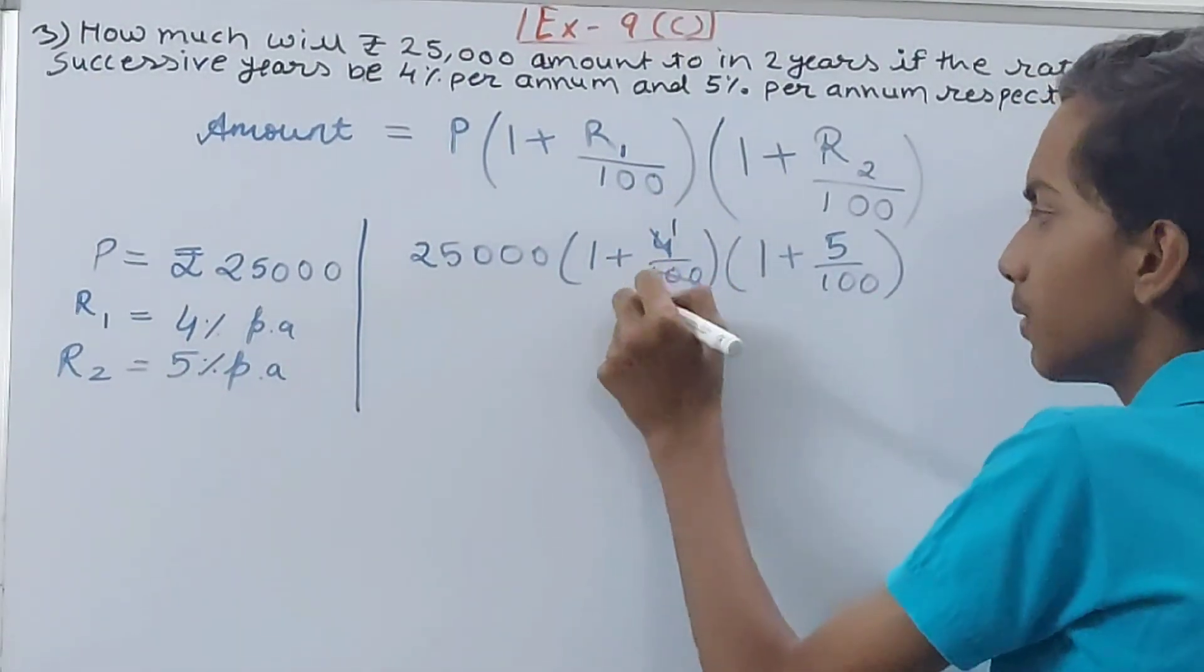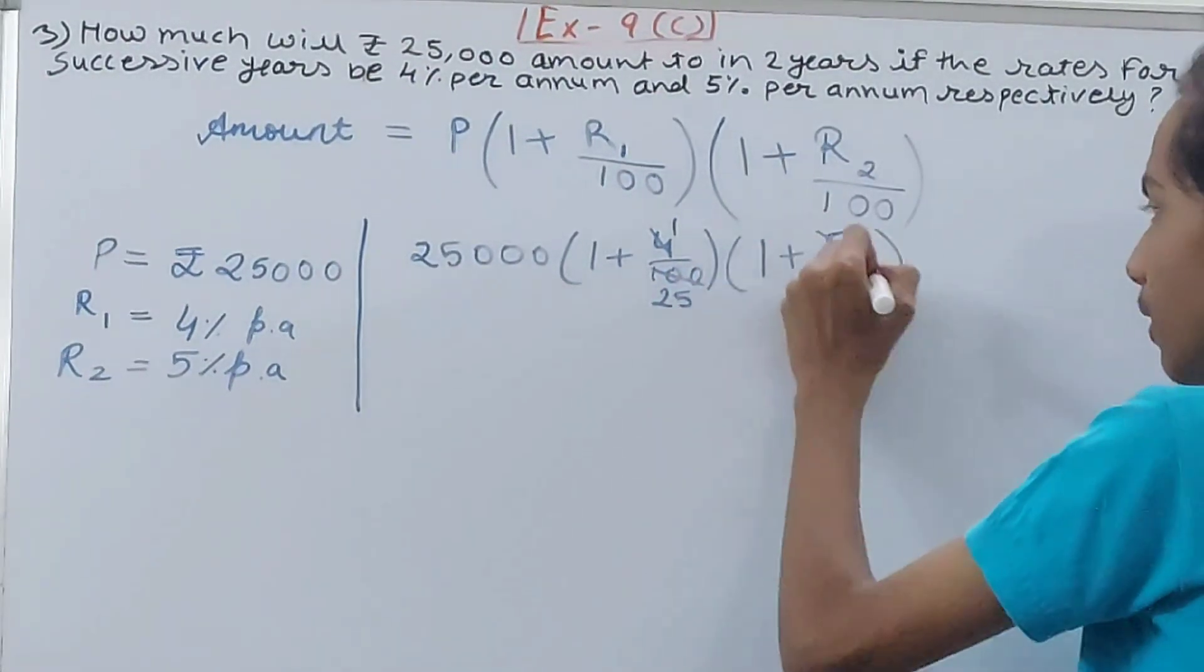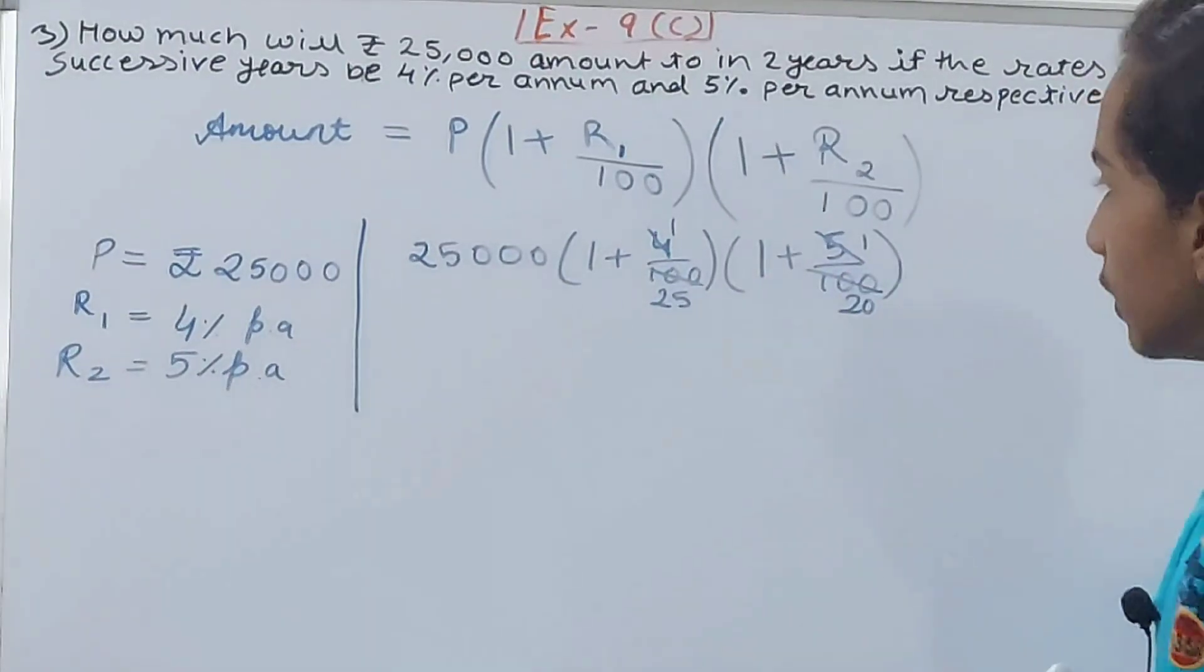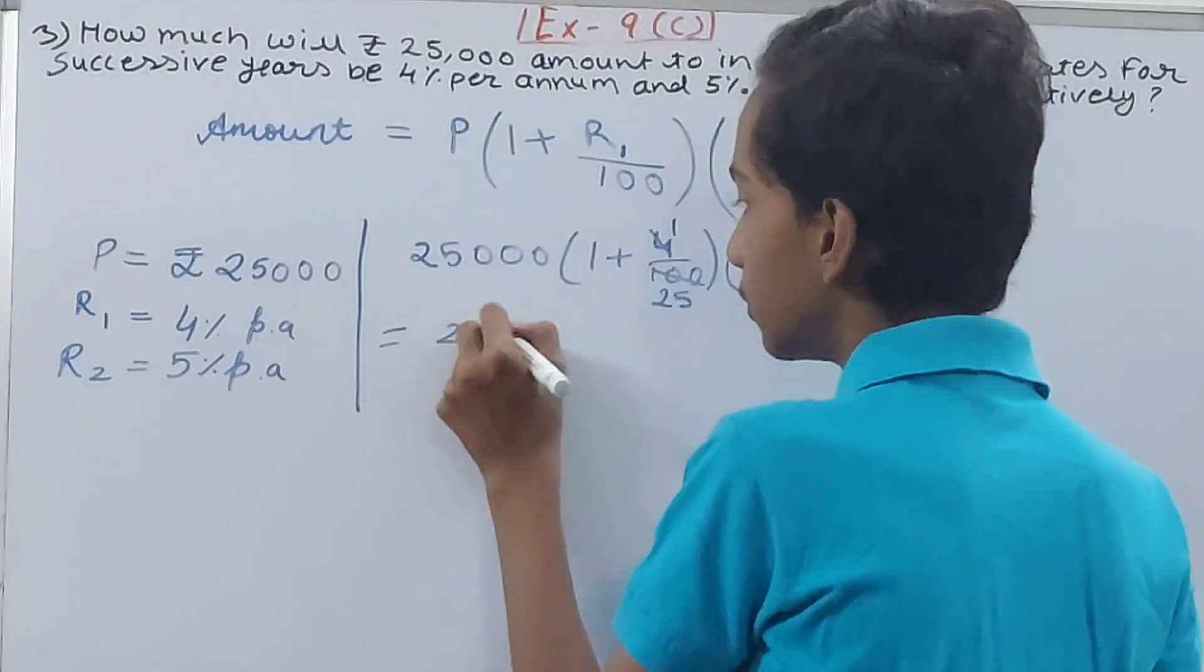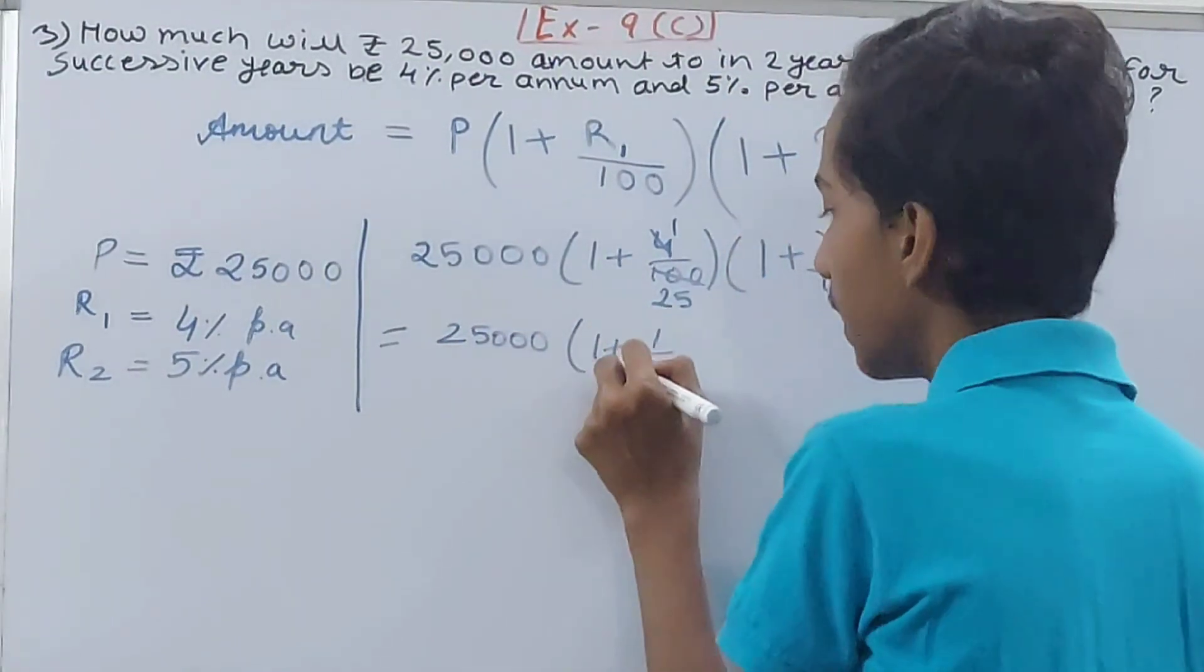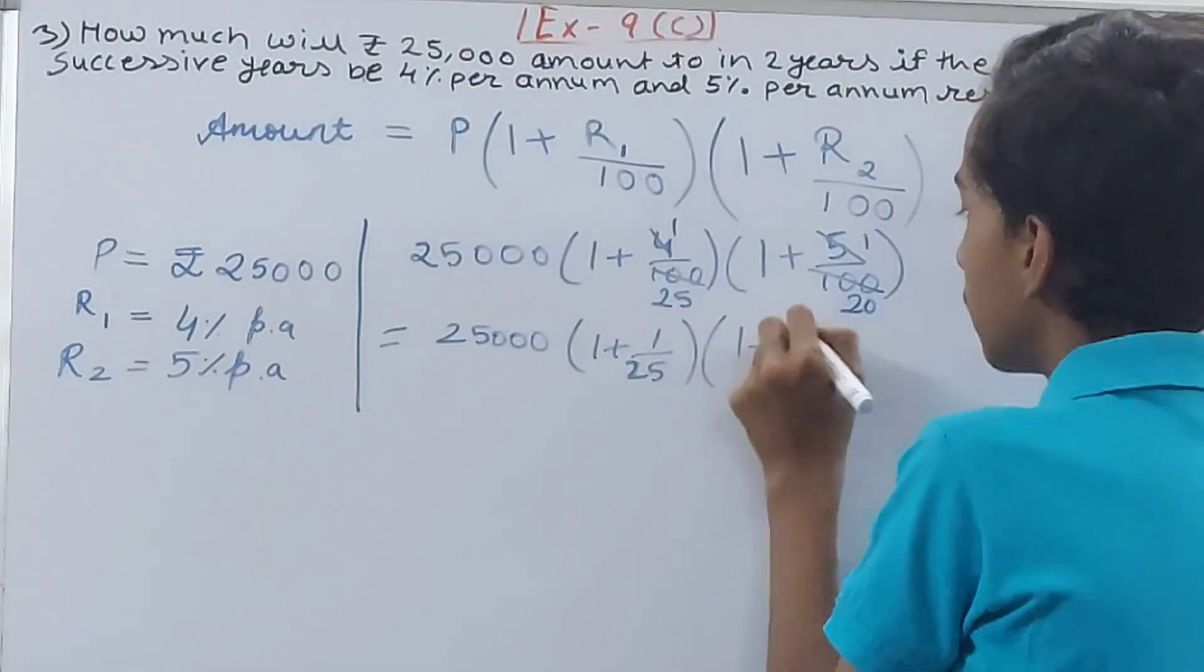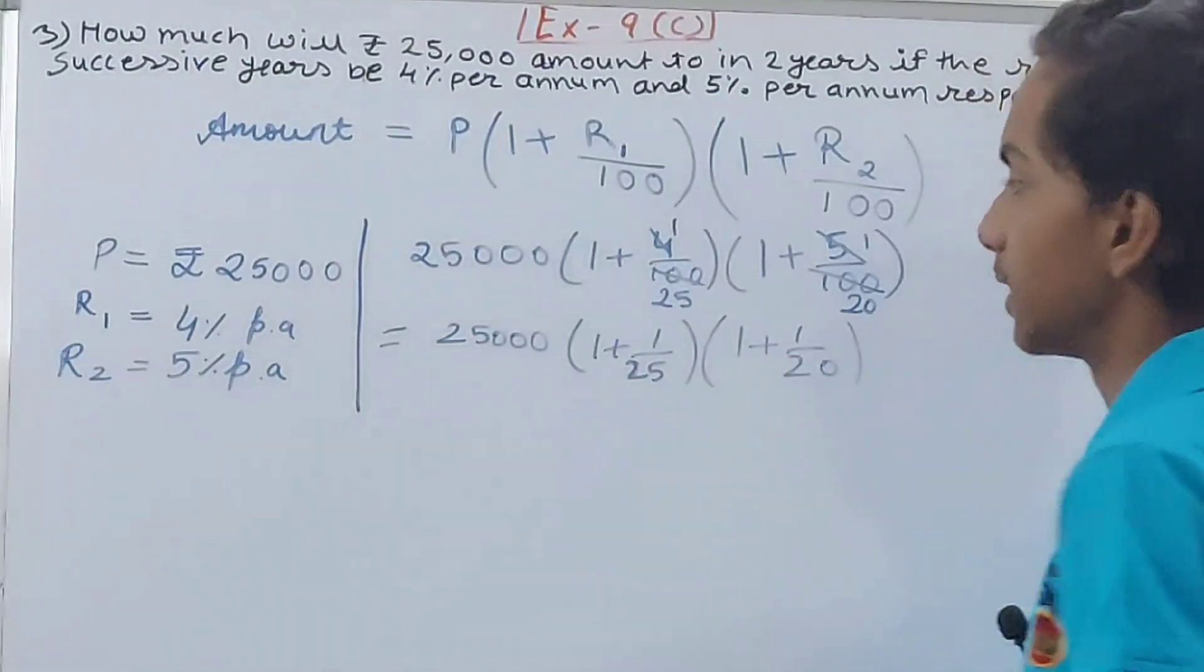You have got 25,000 × (1 + 1/25) × (1 + 1/20). Okay, these two are in brackets. So what next I will do is, you can see I told you, whenever we are adding anything to 1, the numerator will become what? The denominator of the fraction. So this 1 becomes 25, this 1 becomes 20, and solve.